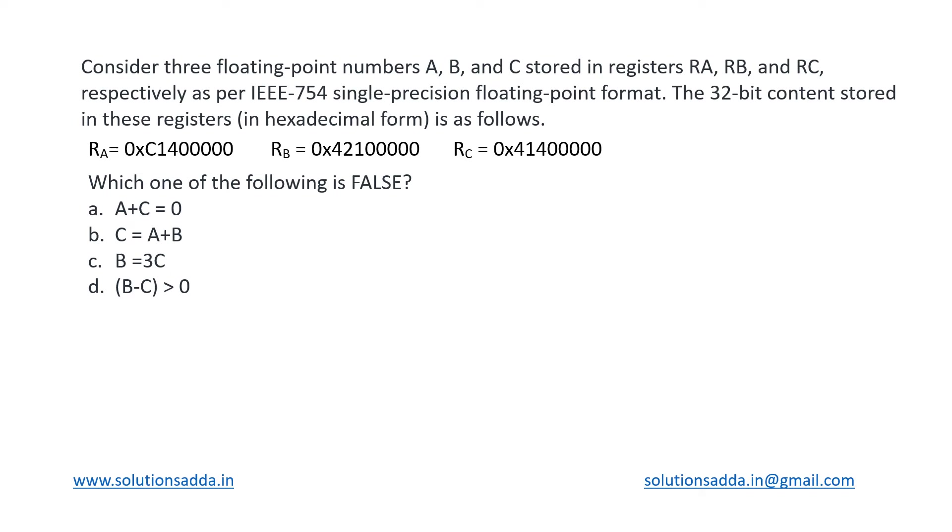This is a digital logic question based on number systems. We have been given three floating-point numbers A, B, and C stored in registers RA, RB, and RC respectively in IEEE 754 single precision floating-point form. These are 32-bit registers in which these floating-point numbers are stored using this standard. The numbers are given in these registers, and we need to identify those numbers and then determine which of these options is or are false.